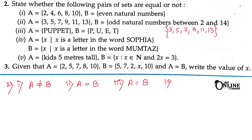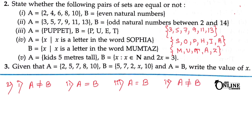Fourth pair: A = letters in the word 'Sofia' = {s, o, p, h, i, a} and B = letters in the word 'Momtaz' = {m, u, t, z}. Since the elements differ, A is definitely not equal to B.